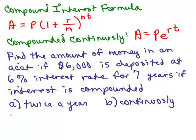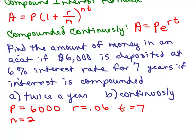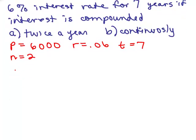Okay, for both of them, we've got that P is 6,000. The rate is 6%, .06. The number of years, T, is seven. And, for part A, we also have to know how many times a year, so n is going to be two.